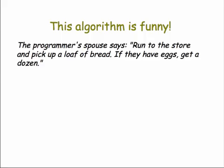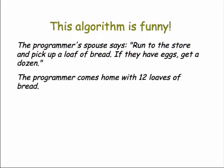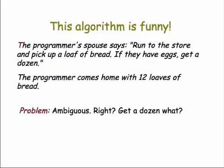Here's a funny example. The programmer's spouse says, run to the store and pick up a loaf of bread. If they have eggs, get a dozen. And the result of this algorithm is the programmer comes home with twelve loaves of bread. The problem here is it's ambiguous, right? Get a dozen what? The algorithm doesn't say.